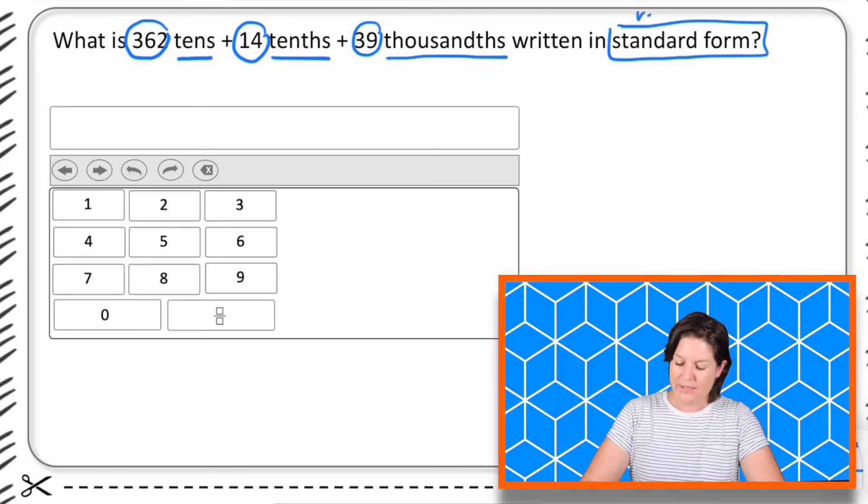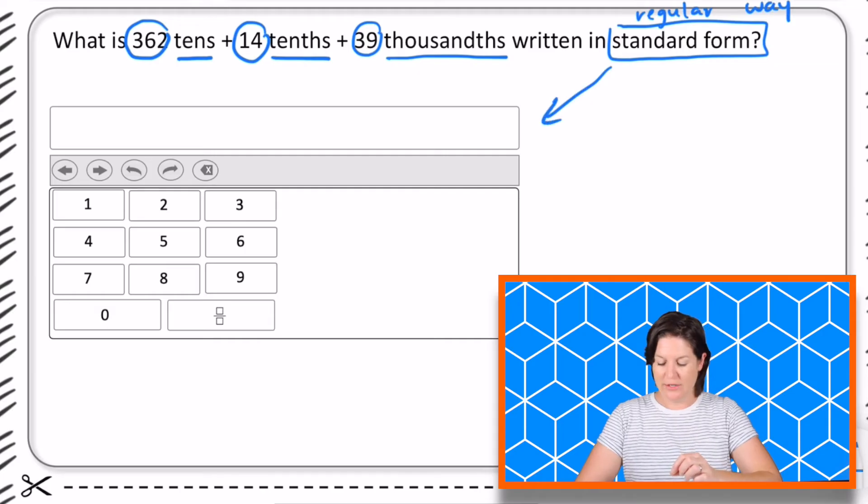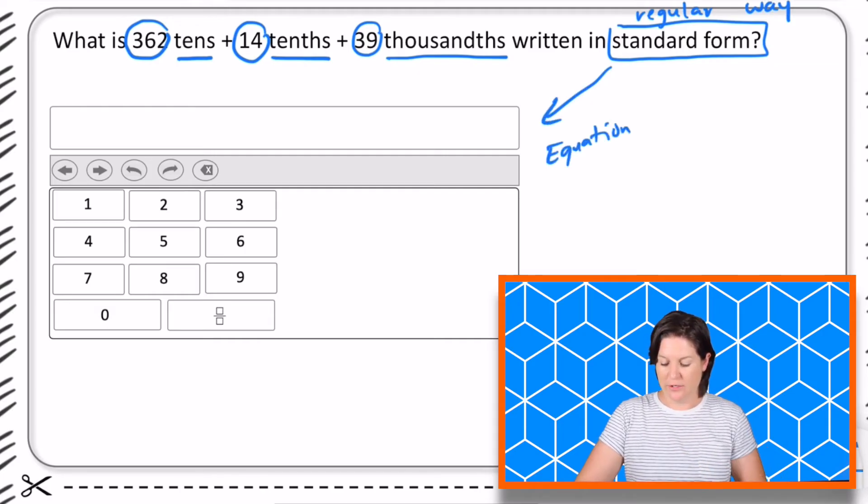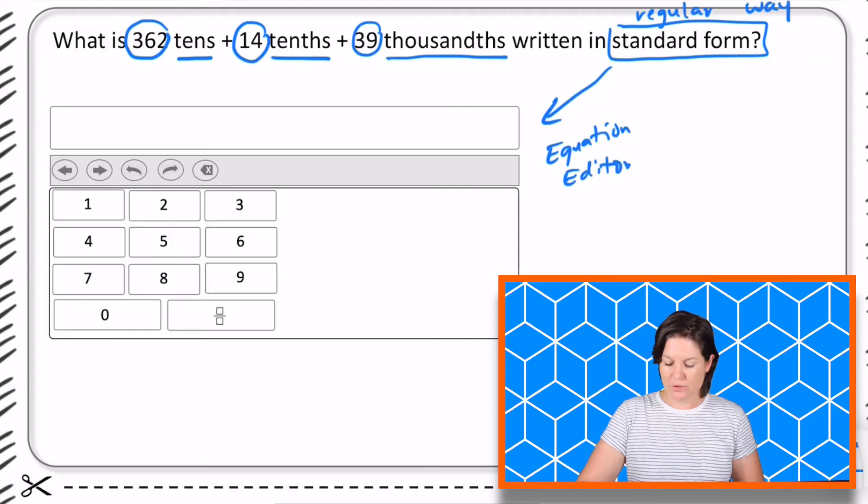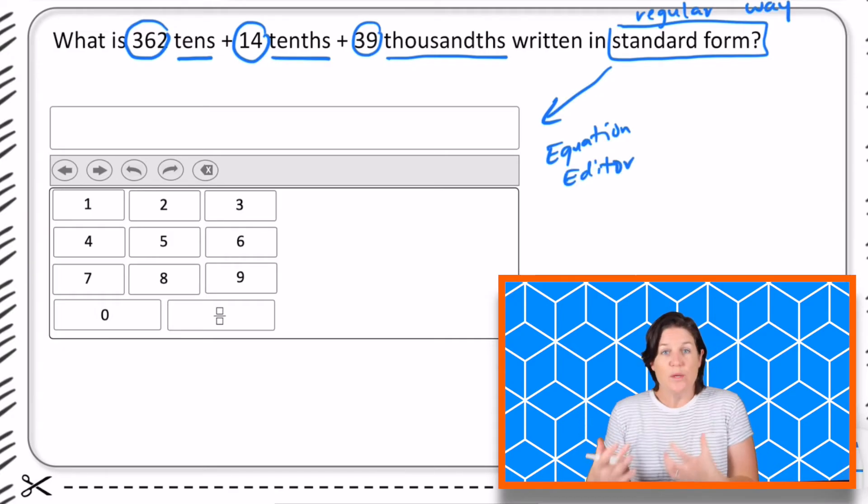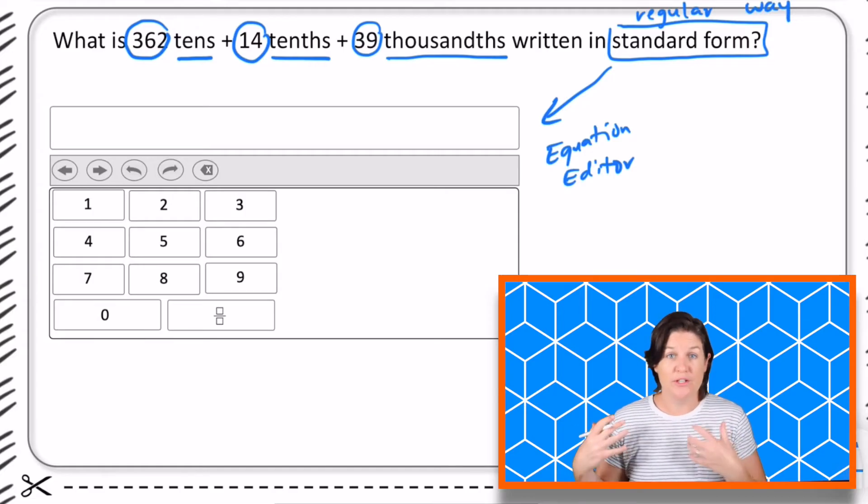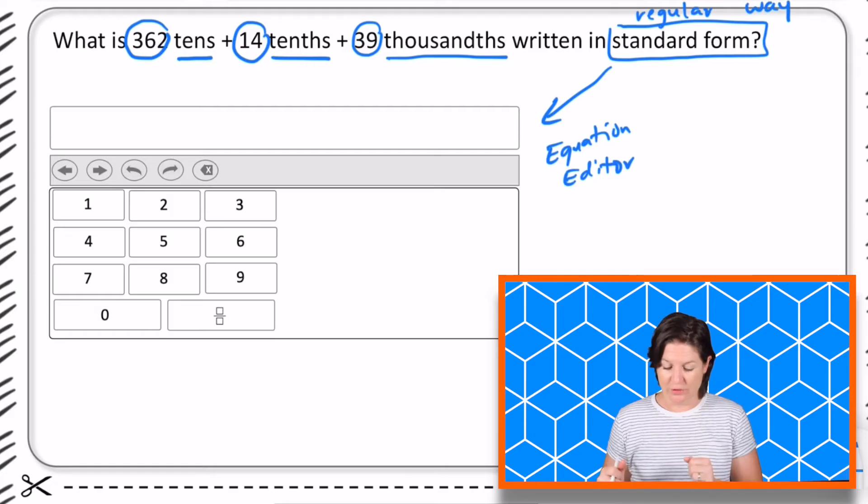Okay so standard form is the regular way, the standard way that we write numbers, which is what is going to go right here in our equation editor. Now this tool over here kind of looks like a calculator but usually we would use these to input an equation or a value. In this case we're just going to put in our value at the end once we figure this one out.